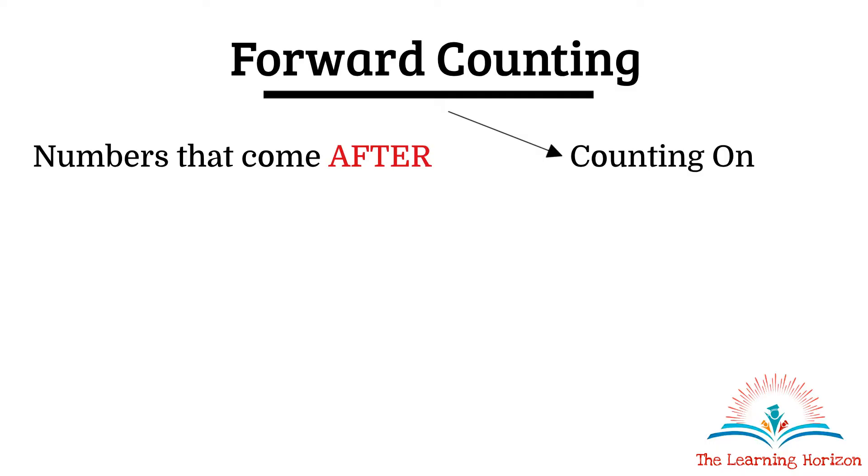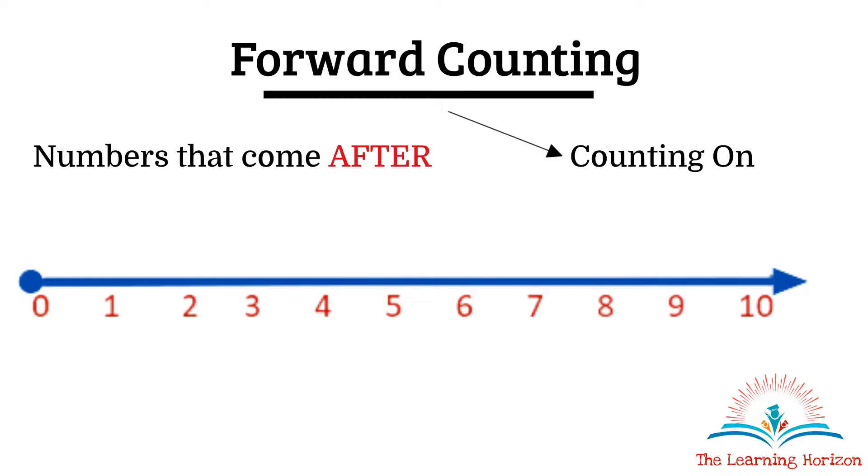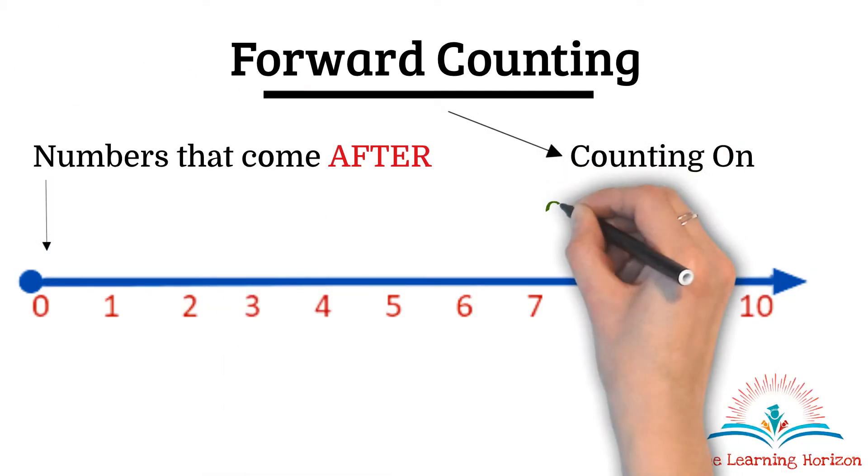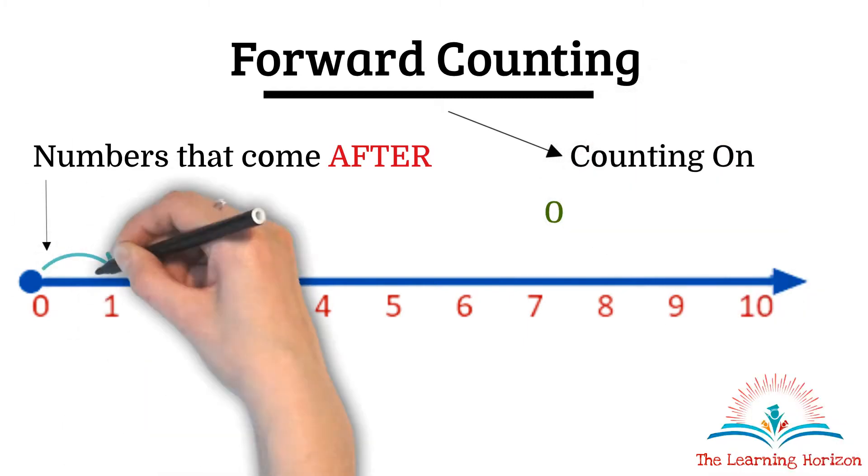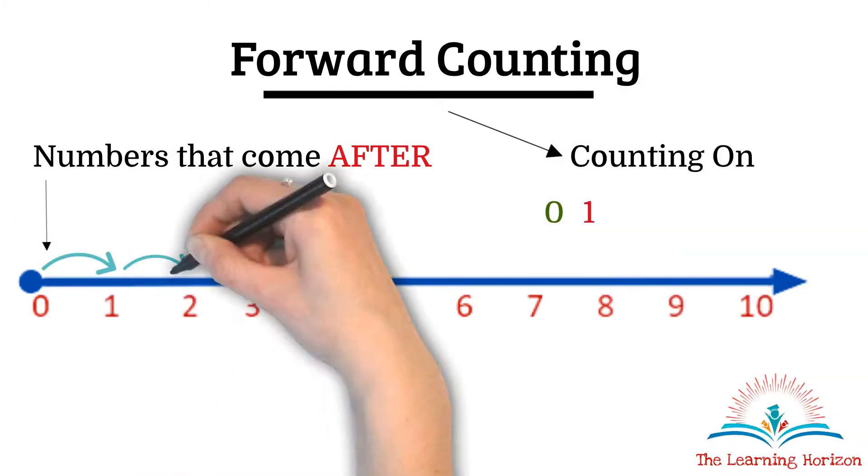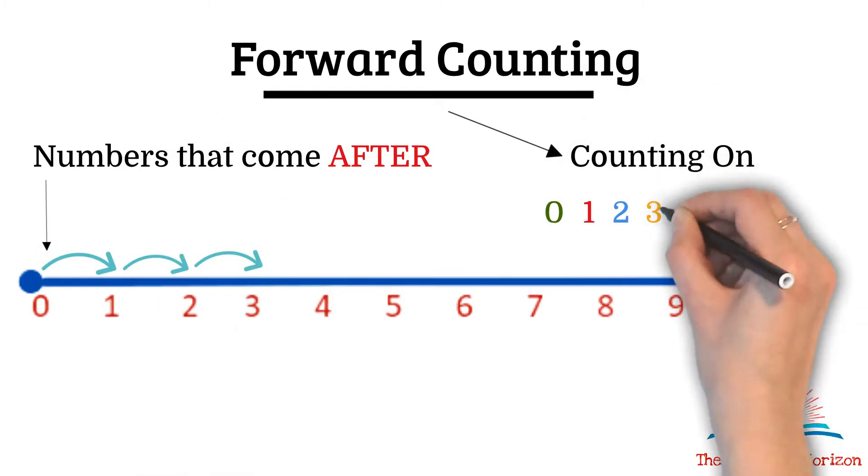Example: look at this number line. It has numbers from 0 to 10. If I have to count on from 0, it will be 0, 1, 2, 3 and so on.